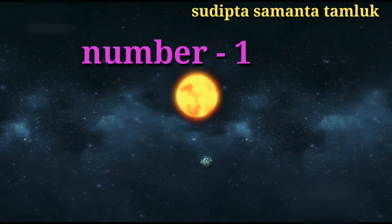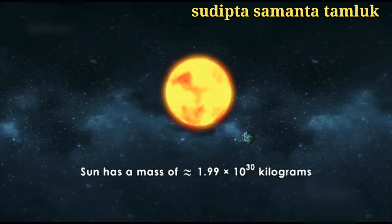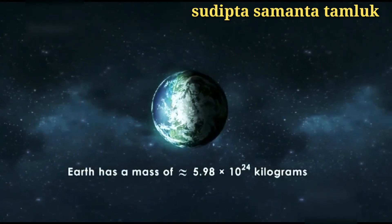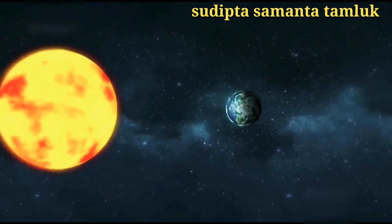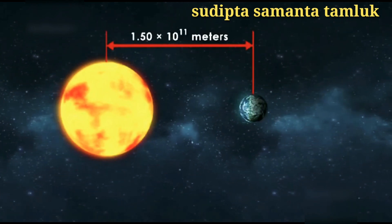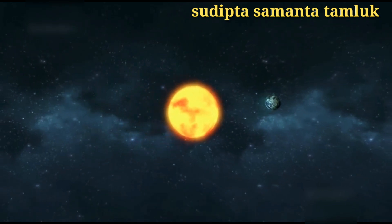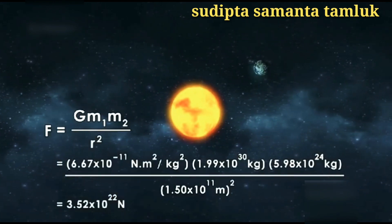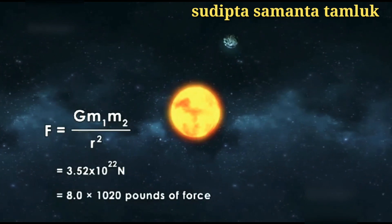Let's calculate the force of attraction between the sun and the earth. The sun has a mass of approximately 1.99 × 10³⁰ kilograms, while the earth has a mass of roughly 5.98 × 10²⁴ kilograms. The distance between the sun and the earth is about 1.50 × 10¹¹ meters. Substituting these numbers into the equation, the force of gravity between the sun and earth is 3.52 × 10²² newtons, or about 8.0 × 10²⁰ pounds of force.